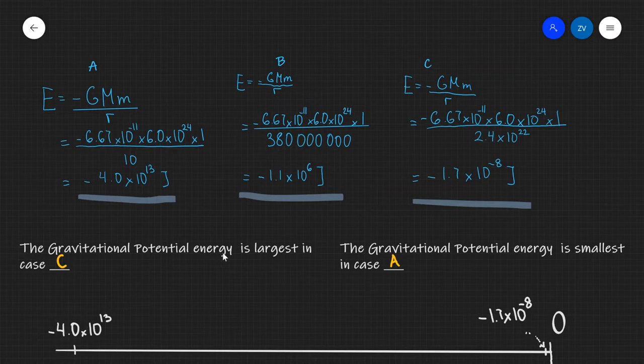So the gravitational potential energy is largest in case C and smallest in case A. Now this is counter-intuitive. The reason why this is the case is because A is a larger negative number which actually means a small value whereas C is actually increasing. In other words the gravitational potential energy tends to increase with distance until it starts tending towards zero at infinity.